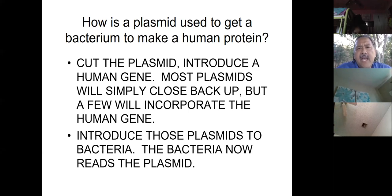And so on this slide, it says, how is a plasmid used to get a bacterium to make a human protein? And just as you saw in the pictures, it says, cut the plasmid, introduce the human gene. Most plasmids will simply close back up, but a few will incorporate the human gene. So usually it just fixes, but sometimes, every once in a while, your gene will be incorporated, will be stuck in to the plasmid. So you've got to find those plasmids and then put those into the bacteria. And now, from then on, that bacteria and the products of reproduction from that bacteria, the progeny, the future bacteria, will also have that plasmid. And then that plasmid will be red, and then the gene product will be created. So that's cool.